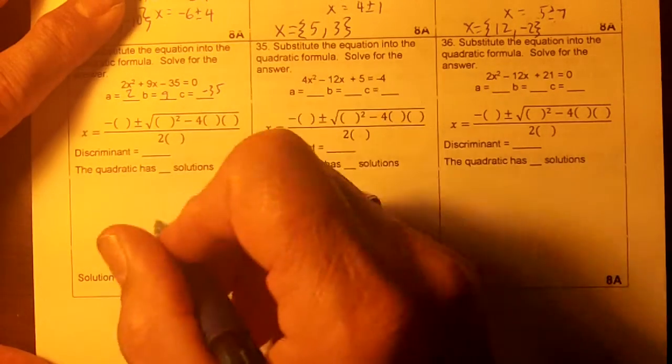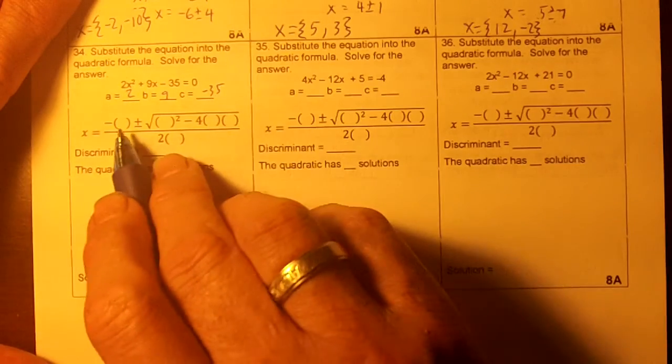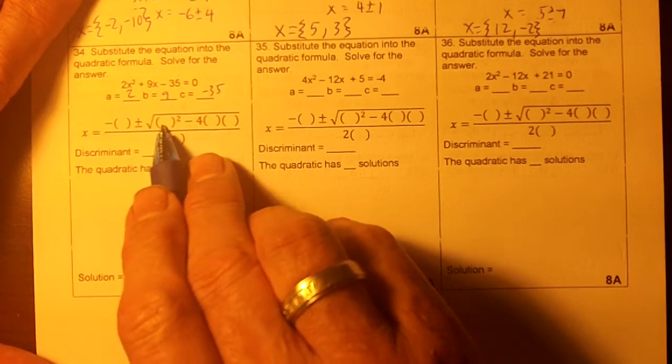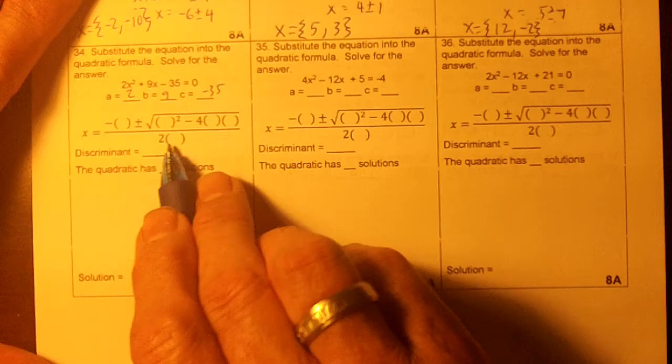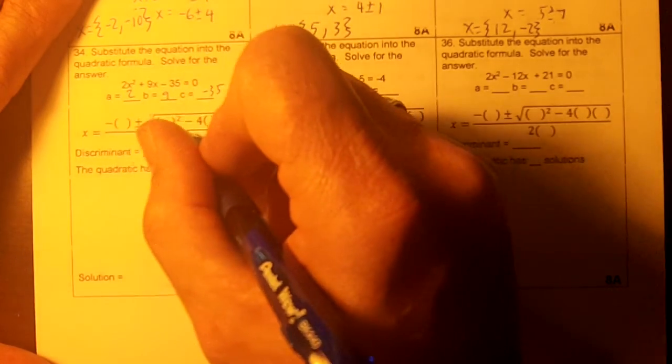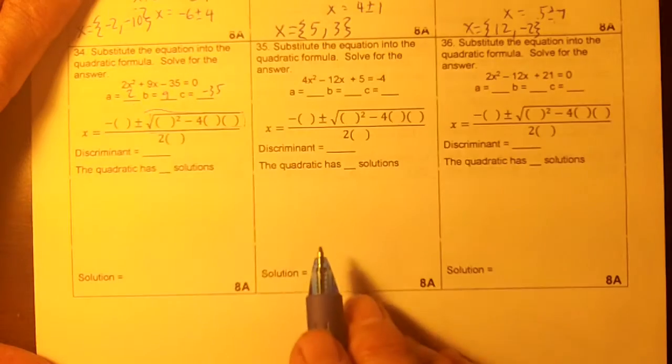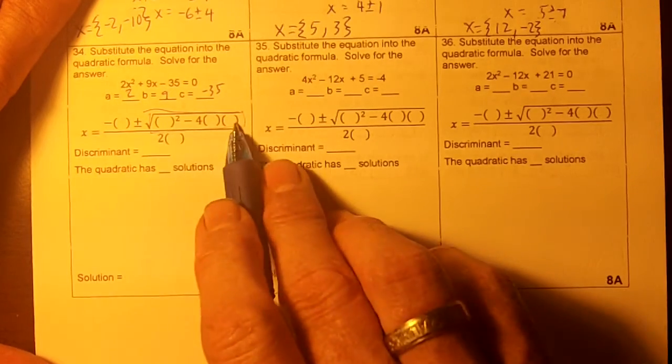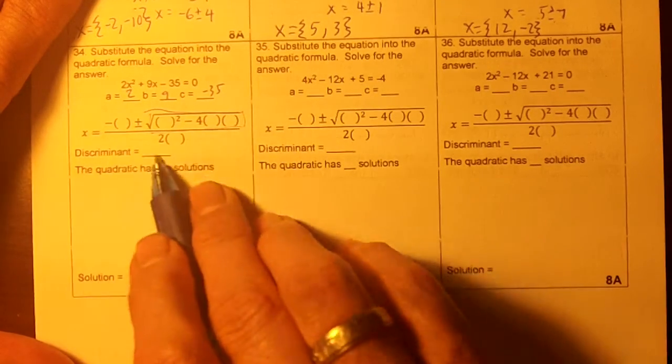And remember the quadratic formula is negative B plus or minus B squared minus 4AC all over 2A. Okay, this will be on the formula chart. This right here is our discriminant. You want to calculate the discriminant first. You don't want to type all this into the calculator.